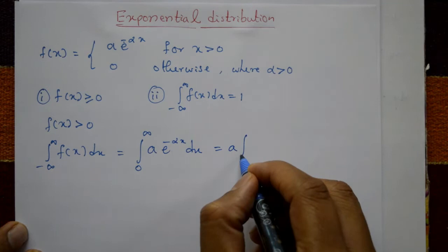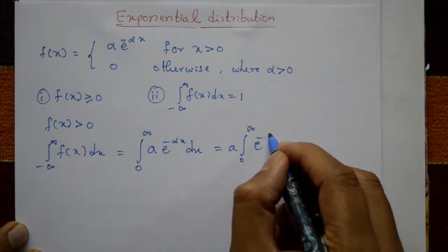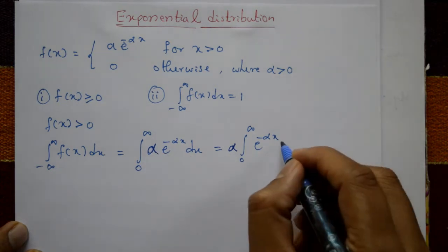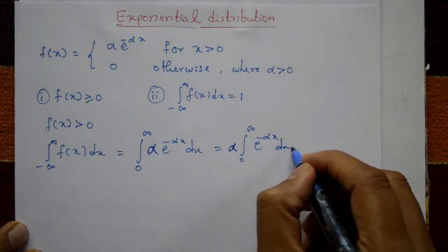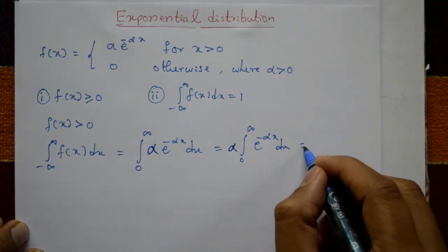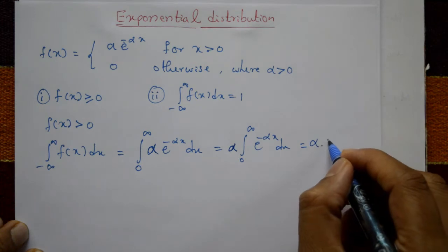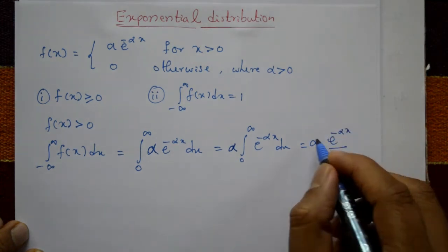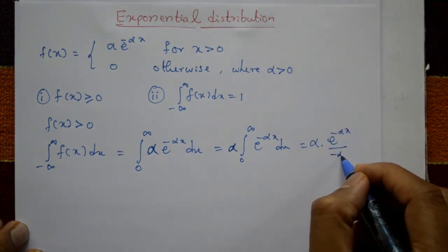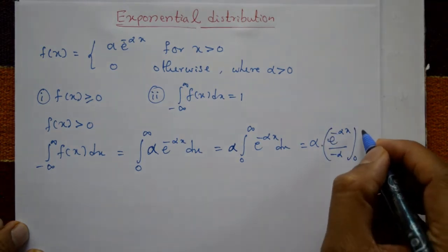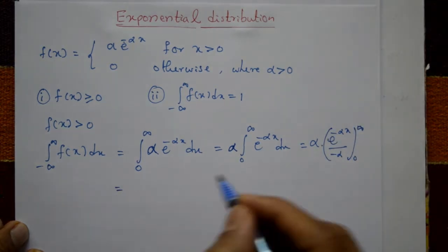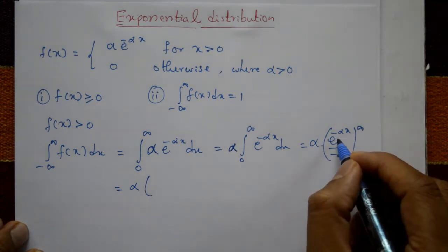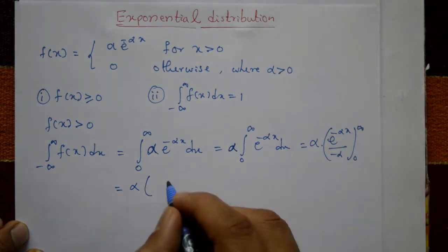Alpha is a constant, so we take it outside the integral. Integrating e^(−αx) with respect to x gives e^(−αx) divided by (−α), evaluated with limits from zero to infinity.